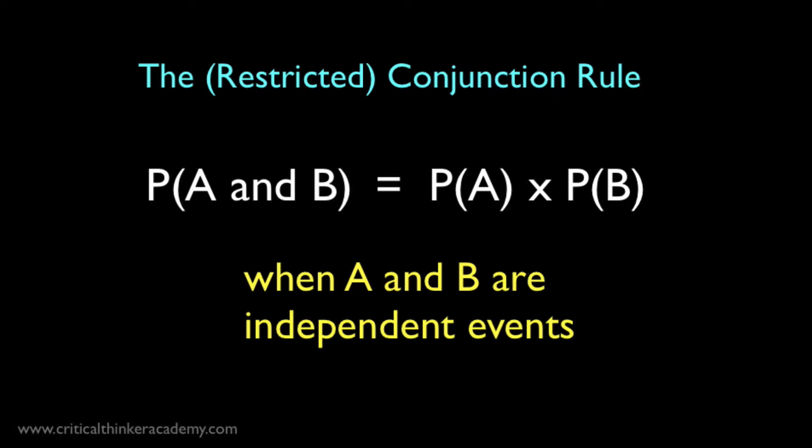And this is the restricted conjunction rule. If A and B are independent events, the probability of the conjunction of two events, which is just the probability of the two events both occurring, or of the corresponding propositions both being true, is just the product of the probabilities taken separately.